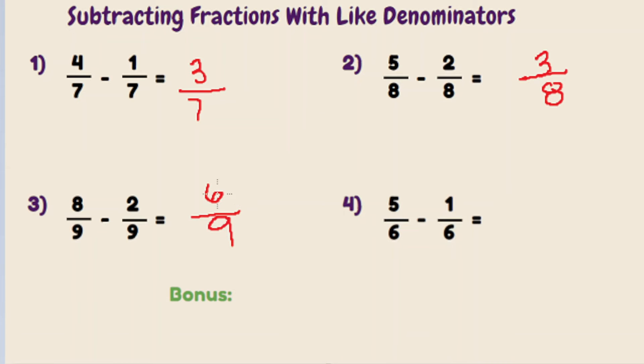Are there any numbers that are common factors between 6 and 9? Well, if you said 3, then you're correct. So what we're going to do is we're going to take 6 divided by 3. It's going to equal 2. And 9 divided by 3 is going to equal 3. So 8 ninths minus 2 ninths is in its simplest form 2 thirds.